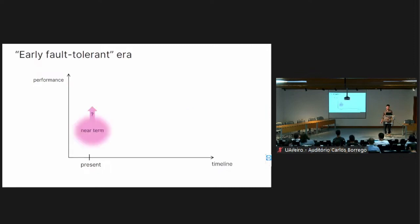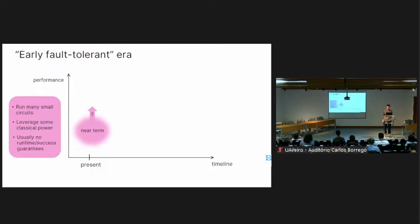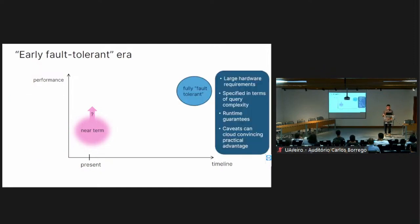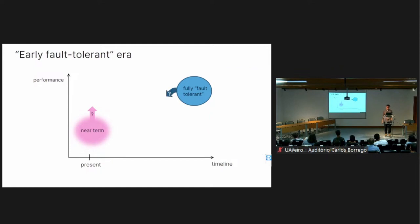Looking at a timeline of quantum computing applications, on one side we have near-term algorithms, characterized by the limitations of current and near-future devices. These try to leverage classical power but tend to lack generic runtime or success guarantees. On the other side we have fully fault-tolerant algorithms, which do have runtime guarantees but often have large hardware requirements.